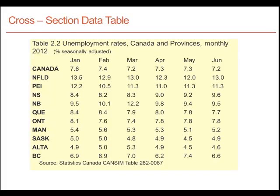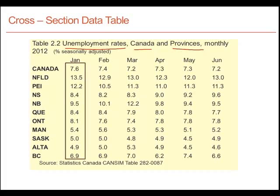Let's now look at cross-sectional data. Cross-sectional data, as the name implies, describe data at a given period of time for a cross-section of sources. Here, for example, we have information on unemployment rates in different provinces and for Canada as a whole by month. In the first column, we have unemployment data for the month of January 2012 for a whole series of provinces. These data define a cross-section of the Canadian economy at a given point in time. Cross-sectional data usually present information on a particular variable at a point in time for a series of different sources or jurisdictions.